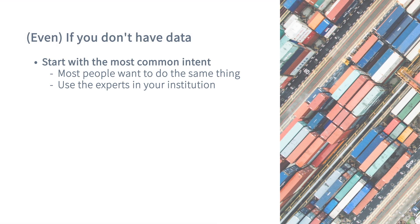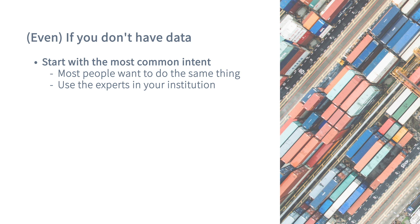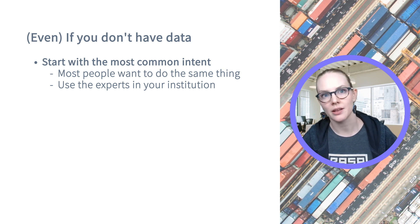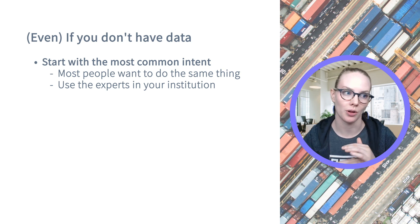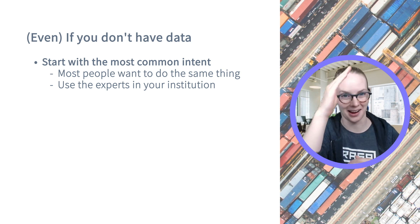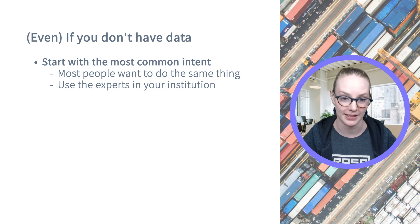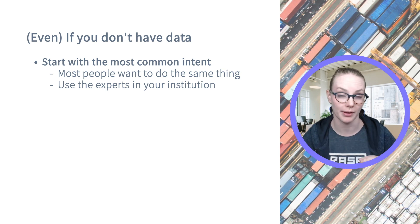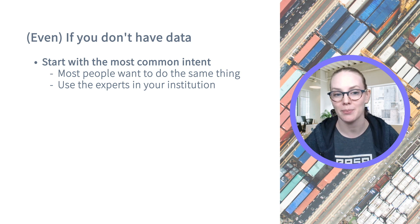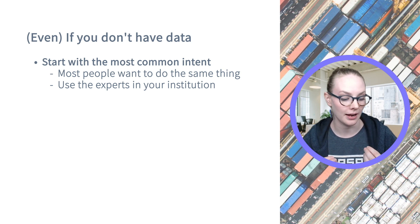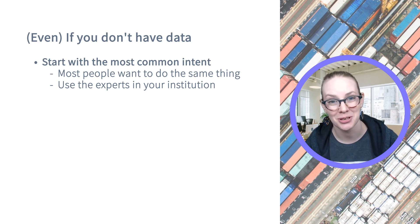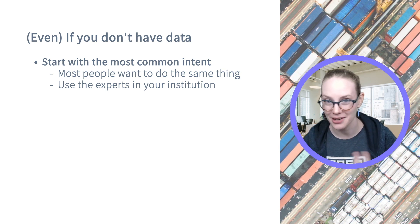If you don't have data, start with the most common intent — the thing that most people are going to want to say to your assistant. If you've spent time looking at conversational data and chatbot logs, you'll notice most people want to do a really small number of things: there's not a uniform distribution across intents — you'll see a couple that are extremely common and then a quick decay. Also, if you're building something for an institution, use the experts there. If you're building something to help your customer support staff, ask your customer support staff — they know what people usually want to do.